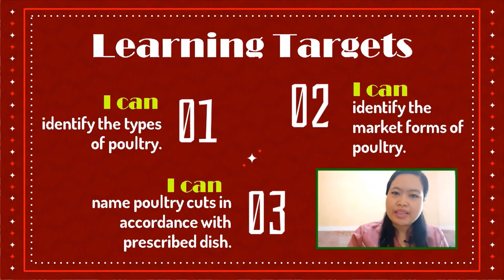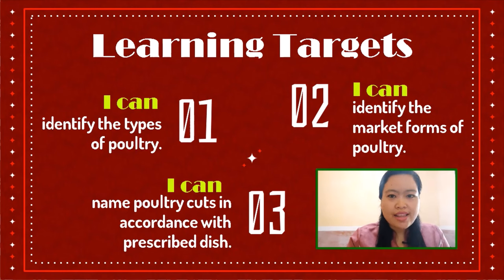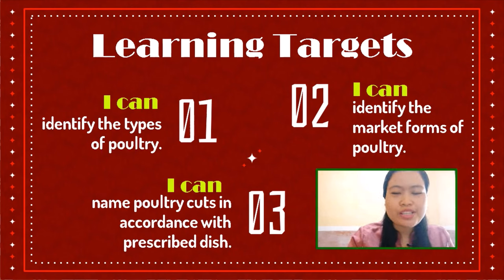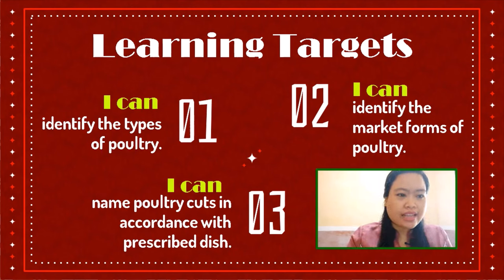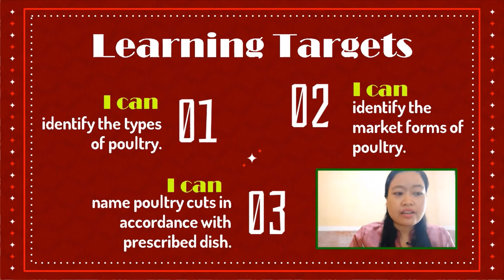Before we dig into our lesson, here are our learning targets. Number one, I can identify the types of poultry. Two, I can identify the market forms of poultry. And last, I can name poultry cuts in accordance with the prescribed dish.